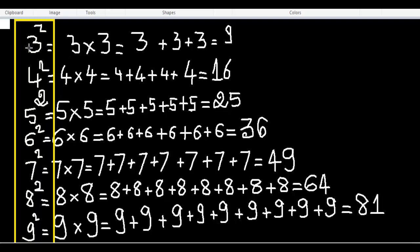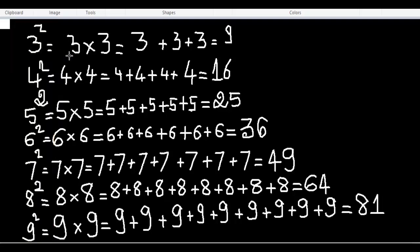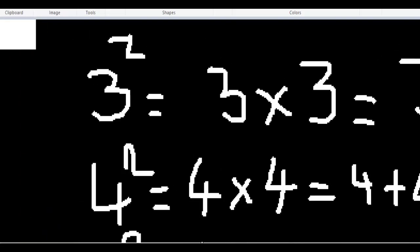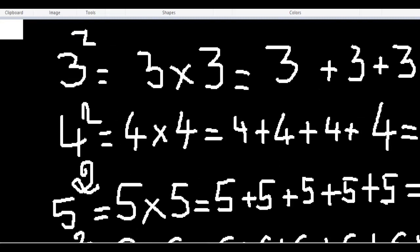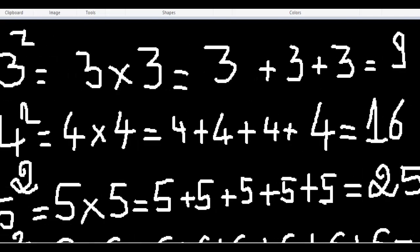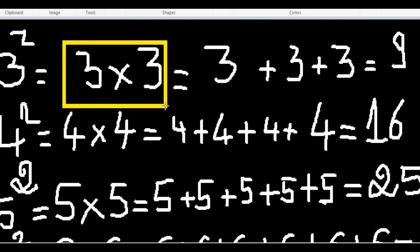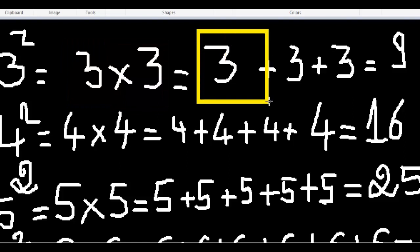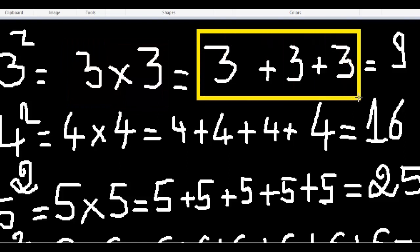You can see three squared equals three times three. That means three plus three plus three, and the sum equals nine.